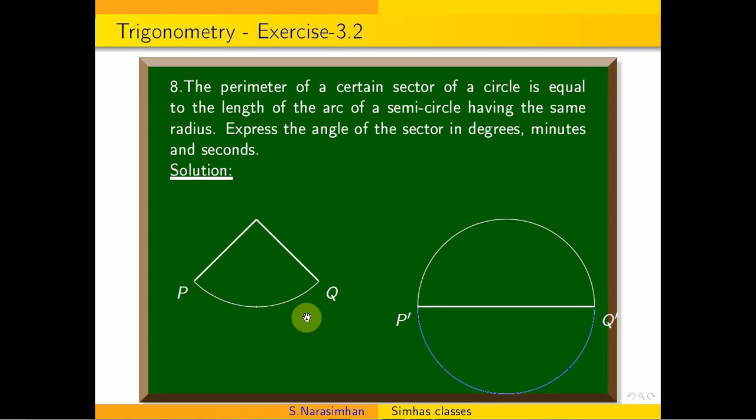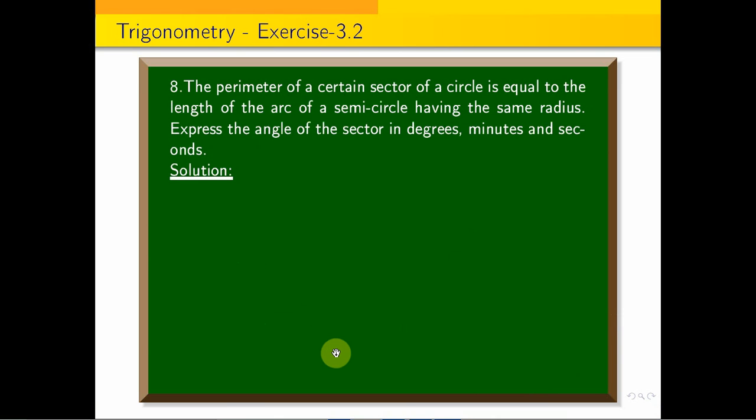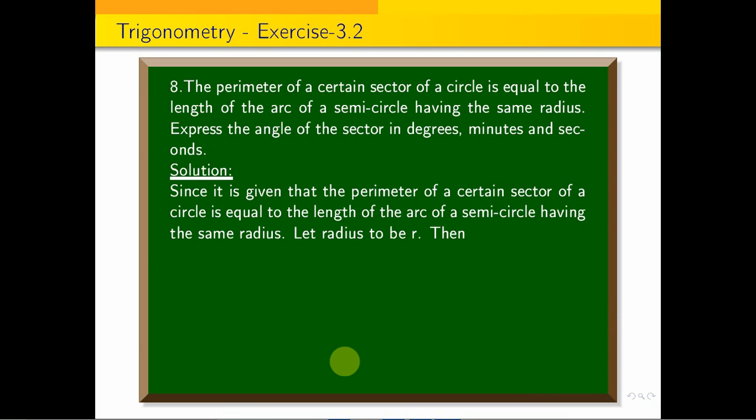What is the angle of the sector? Since it is given that the perimeter of a certain sector of a circle is equal to the length of the arc of a semicircle having the same radius.